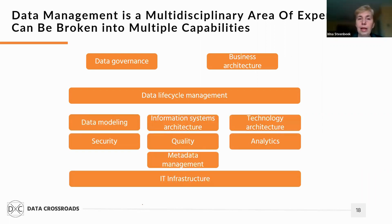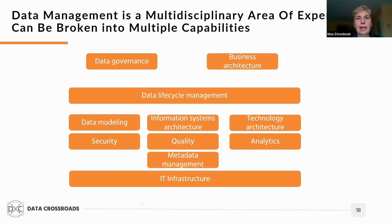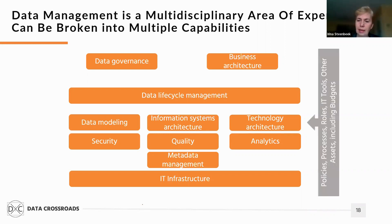The third type of capability is supporting — enabling the core capability. We discovered multiple capabilities that enable data management by designing and delivery. This relates to data modeling and different types of enterprise architecture, data application and technology, security, data quality, and so on. Furthermore, you need a set of policies, processes, roles, and IT tools to enable capabilities themselves.